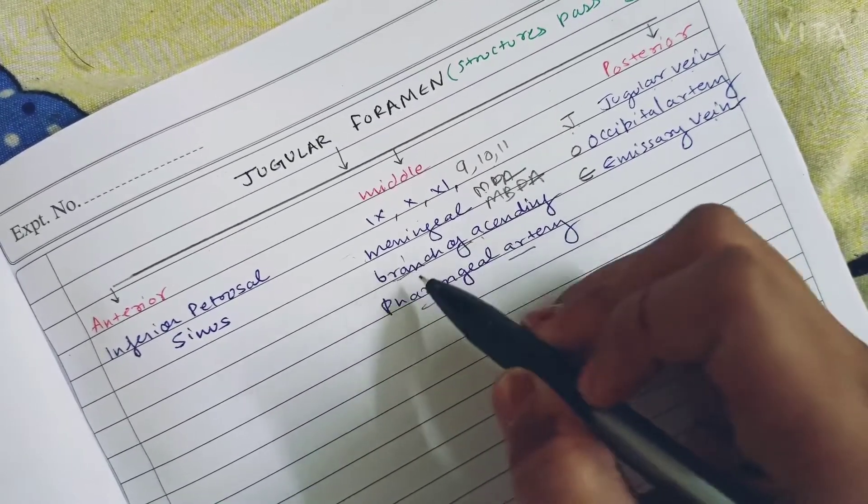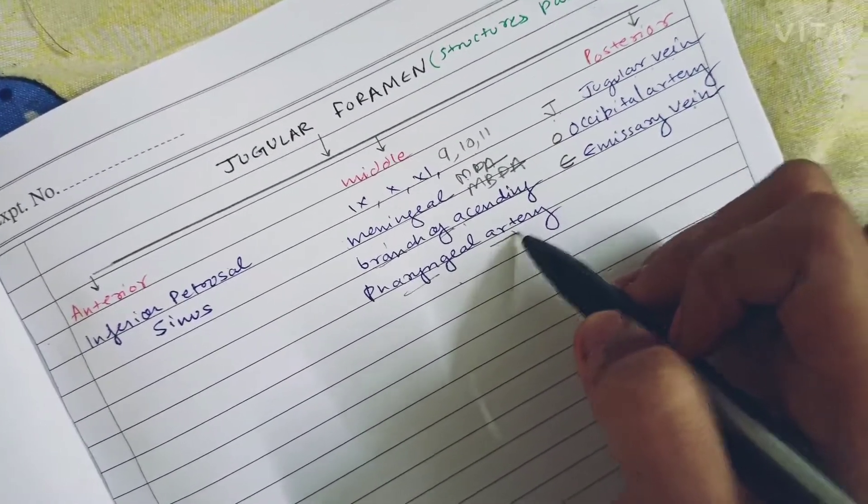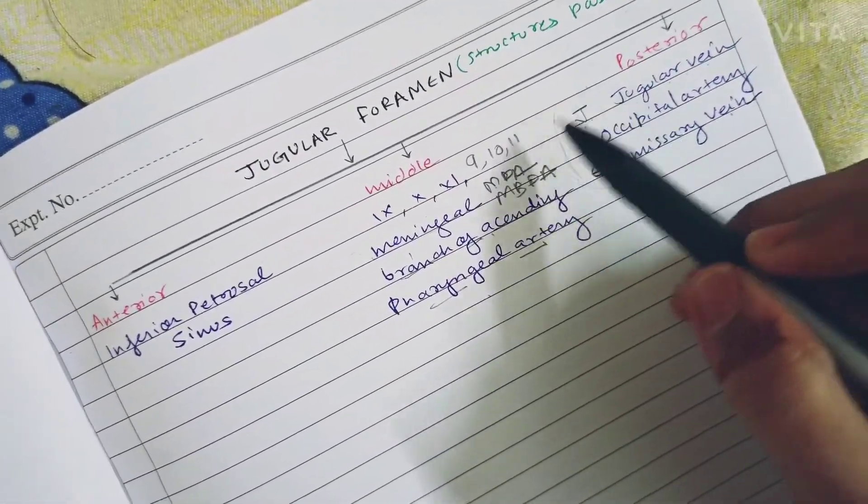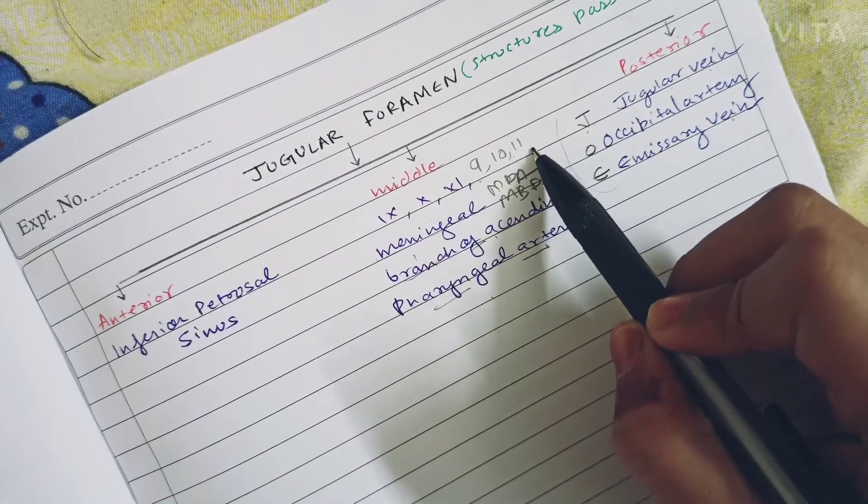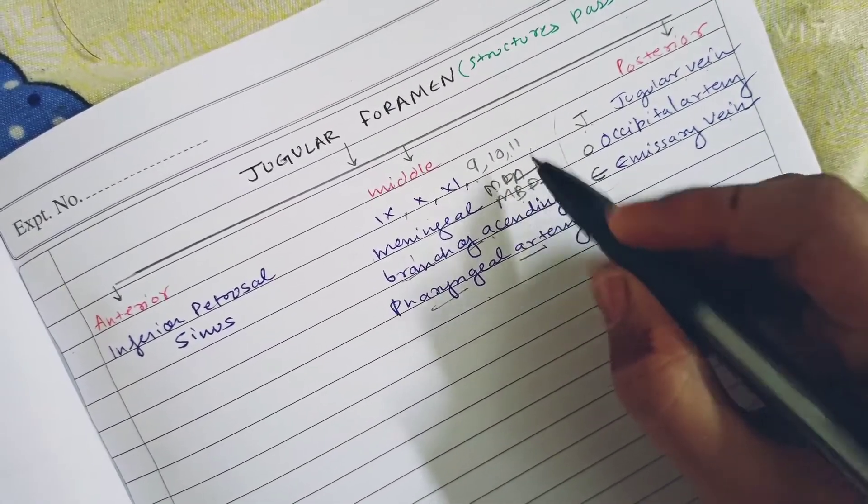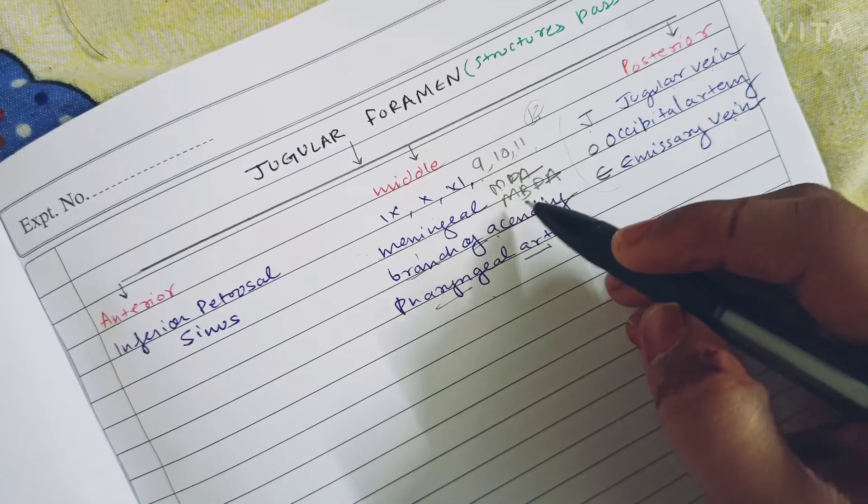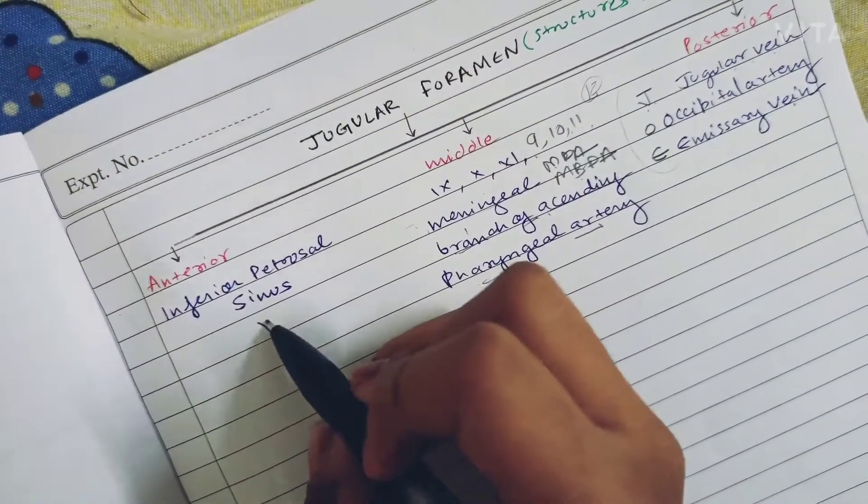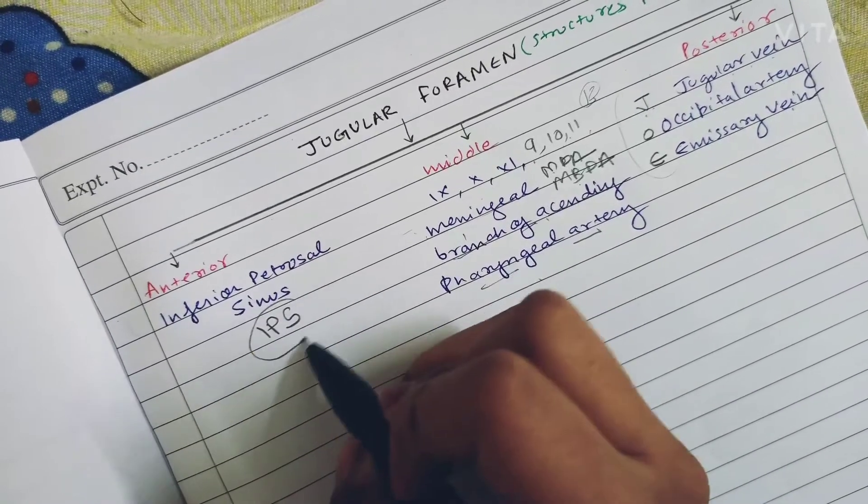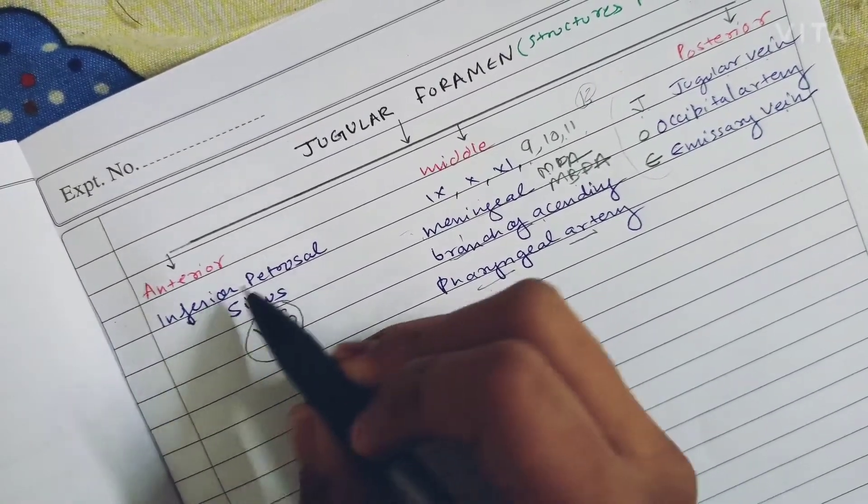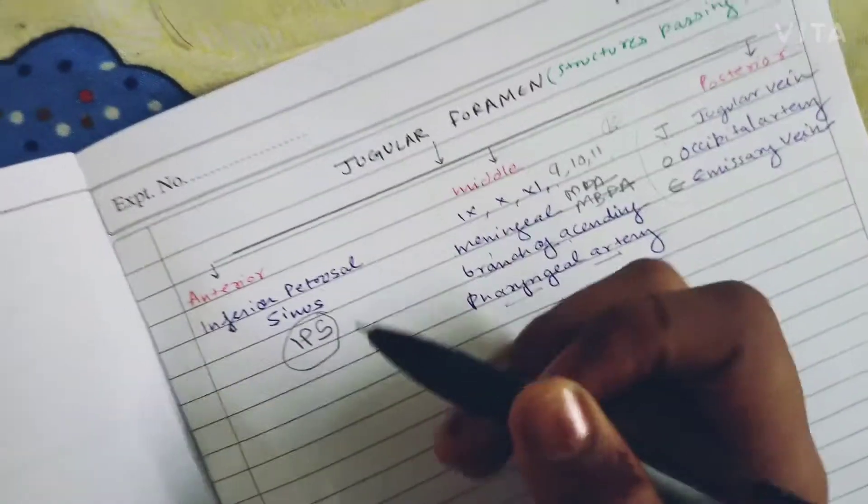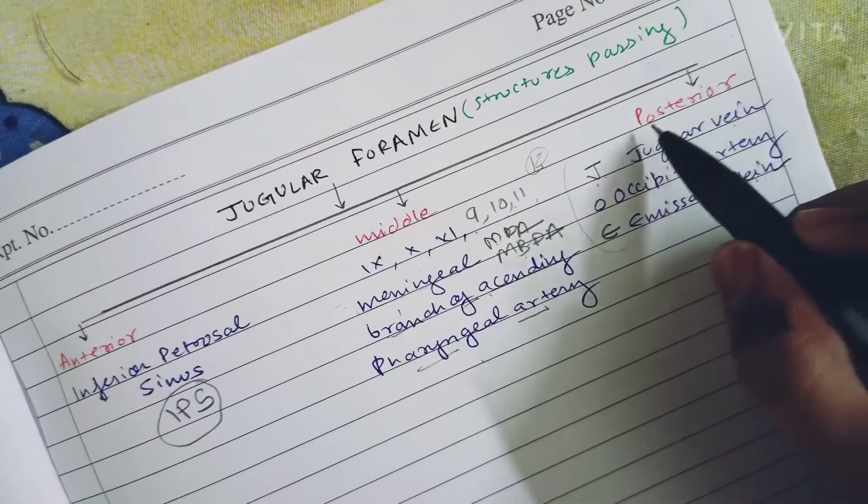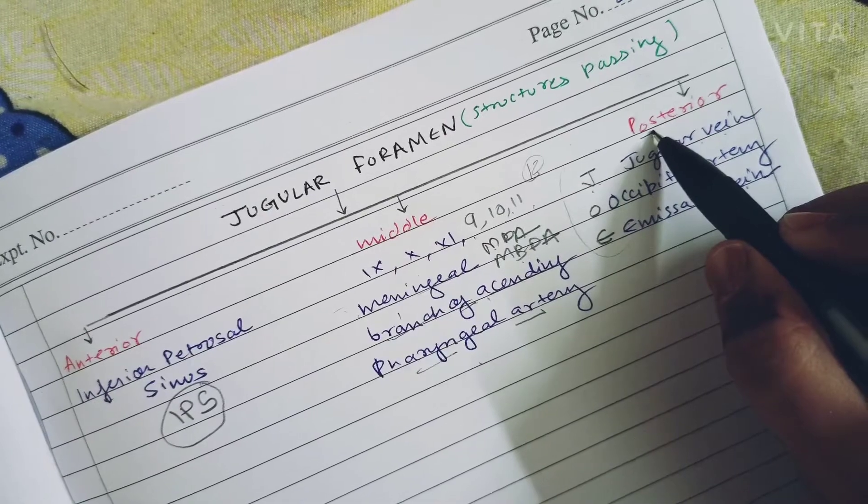So there is a boy called Joe. He did 9th, 10th, and 11th class, then he didn't do 12th class and he did MBA, and then he became IPS officer. IPS is inferior petrosal sinus.